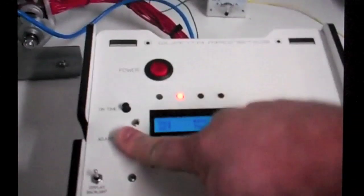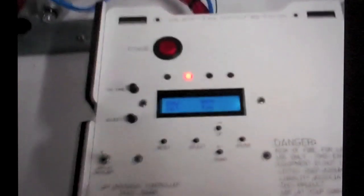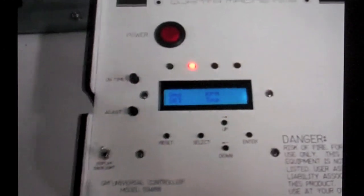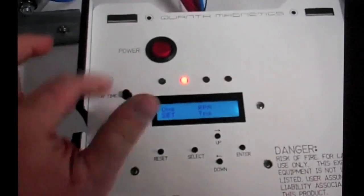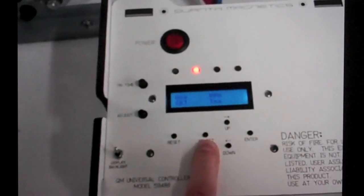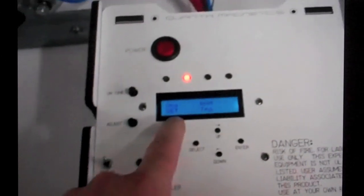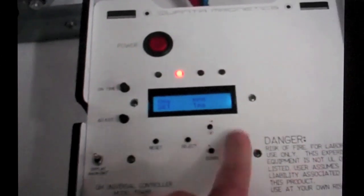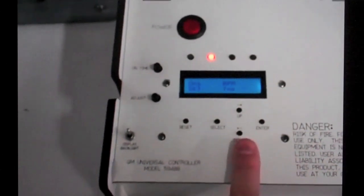Then later we'll come back and we'll get the adjust program. Right now the only programmed buttons on here, the on time for adjusting the pulse coil on time, select puts it in a run mode as well as the set mode. And enter and up and down do not do anything.